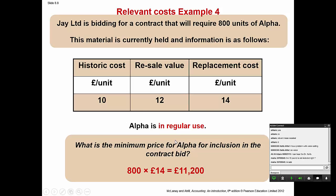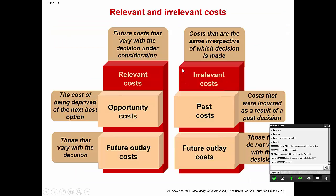Here are the different types of costs that are relevant and irrelevant. Relevant costs are the future costs that vary with the decision under consideration. Each future cost might be a relevant cost. One type is the opportunity cost, which is the cost of being deprived of the next best option — we think of this cost as a chance to make a profit or not from a given choice.